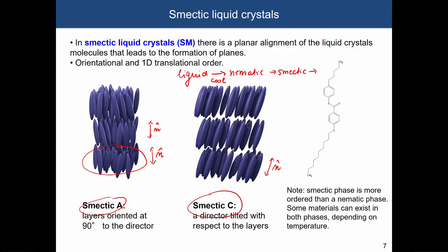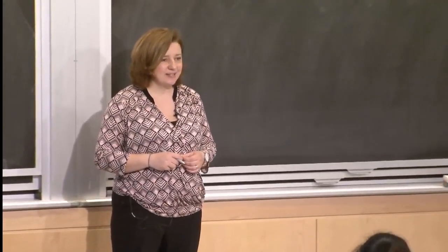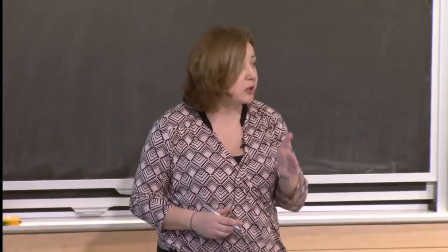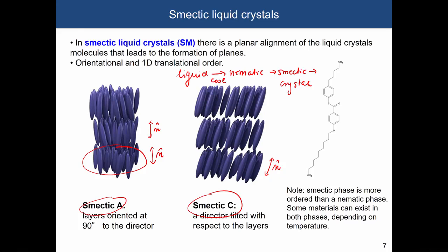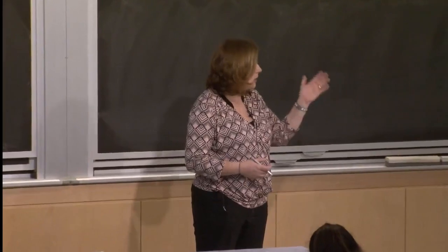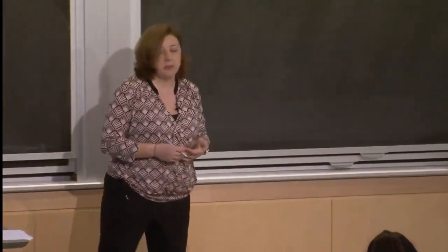If you cool the smectic phase down further, it can form a crystal — though not all liquid crystalline materials can crystallize. Many examples of smectic liquid crystalline materials form layered structures simply because they are polar. The polarity of these molecules, when in solution or liquid, drives the smectic structure. These molecules don't necessarily need to be highly anisotropic — the smectic phase can come from high polarity. Many surfactants, for example, are smectic liquid crystalline materials due to their polar nature.